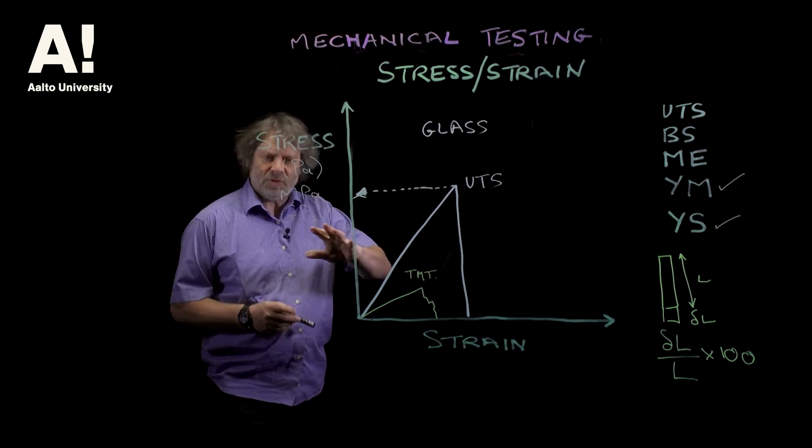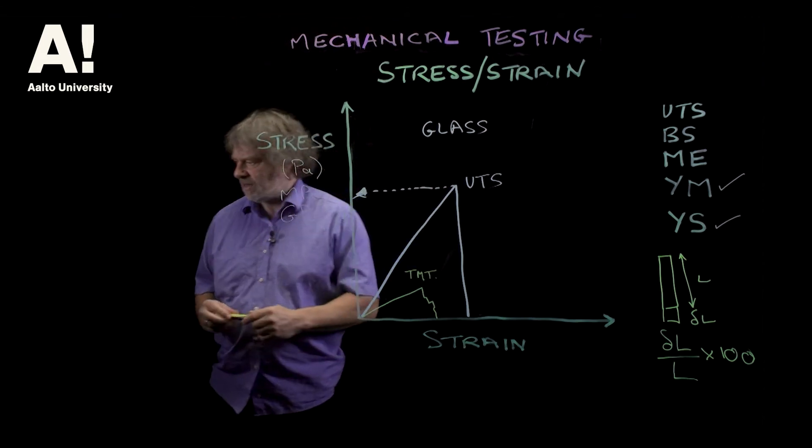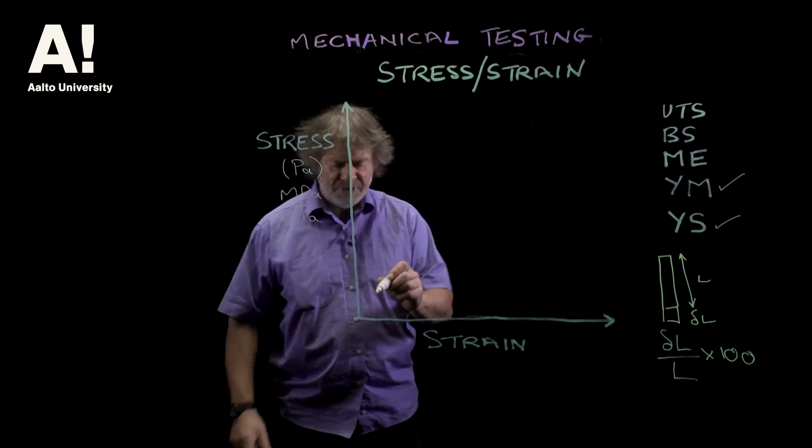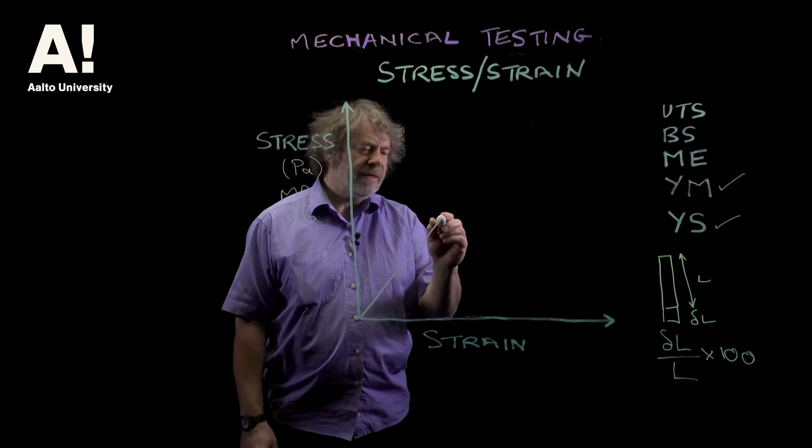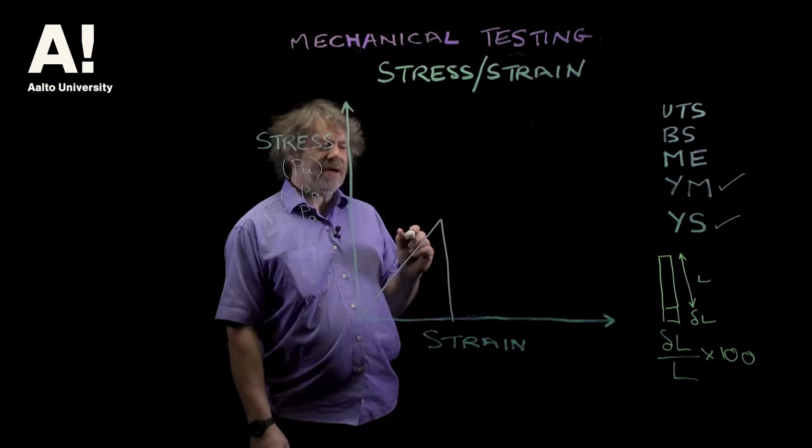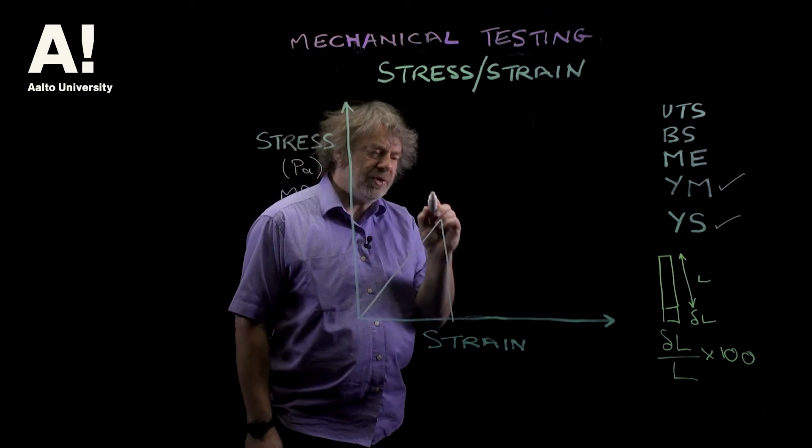So I'll say a little bit more about failure modes in a minute, I just need to clear this off. So if we have a brittle sample that shows hooking behavior, it will just go bang like that, at this point here, that strain would be known as the maximum elongation.